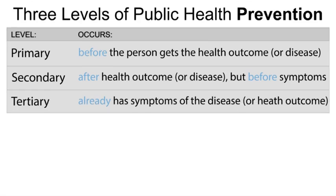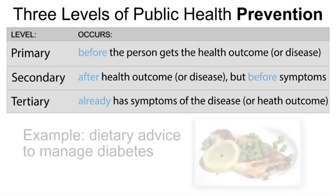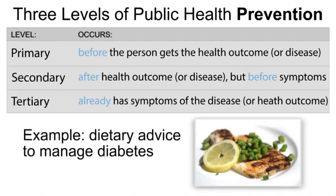Tertiary prevention refers to a person who already has symptoms of the disease. The goal of tertiary prevention is to prevent damage and pain from disease, slow down disease progression, prevent complications, provide better care, and help people recover. An example of tertiary prevention would be offering dietary advice to help manage the symptoms of diabetes.